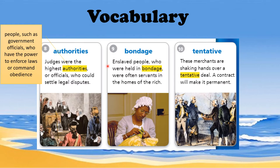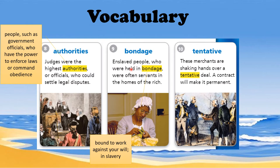Number nine is bondage. Enslaved people who were held in bondage were often servants in the homes of the rich. This was particularly true during the early days of colonial America, when African-American people were forced to work as bondsmen. So bondage means being bound to work against your will in slavery — one of the darkest moments in African-American history.